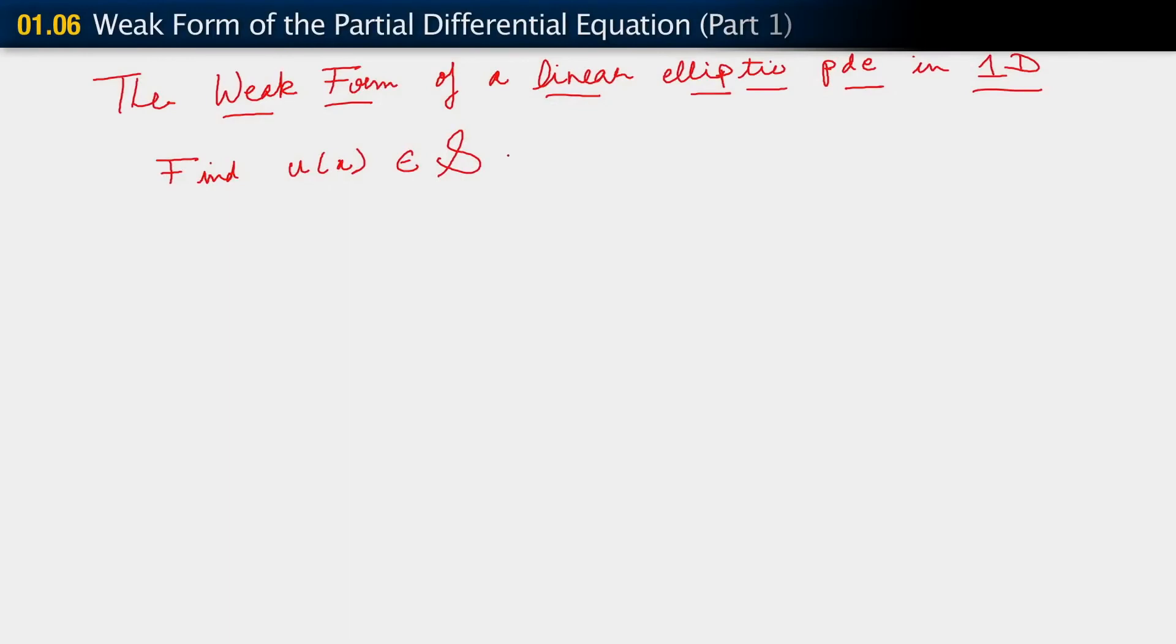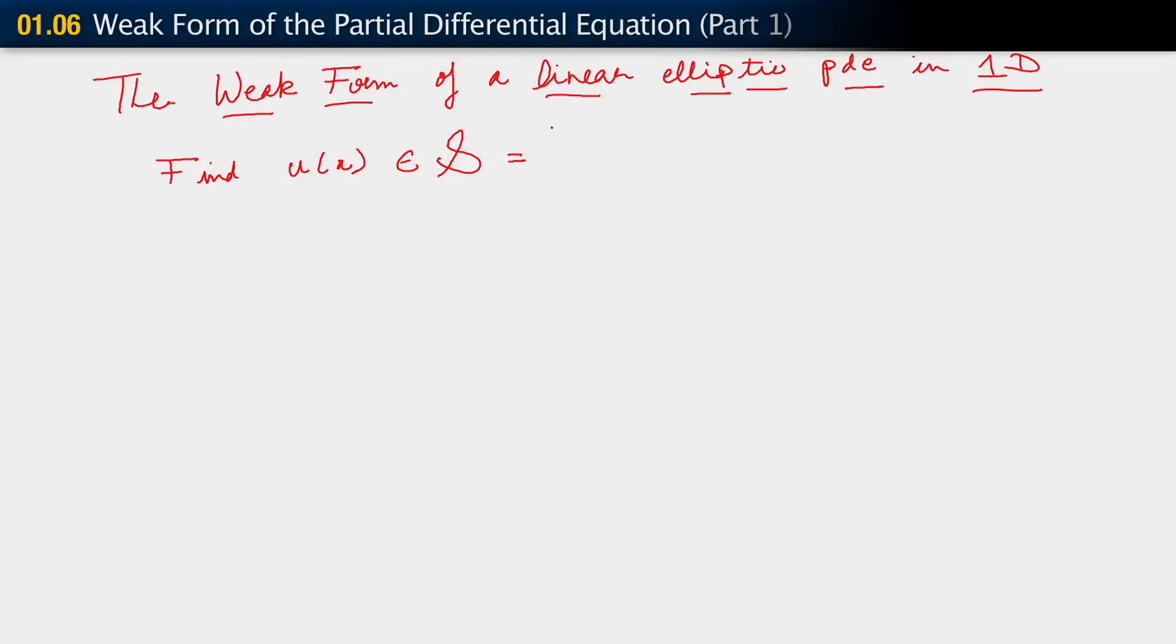All right, we want to say a little more about what the space of functions is. And we say that the space of functions u in s consists of all u such that u at 0 equals u naught. All right, and so what I'm doing here is sort of building in the Dirichlet boundary condition. What we're saying here is that we're only interested in solutions u which satisfy the Dirichlet boundary condition.